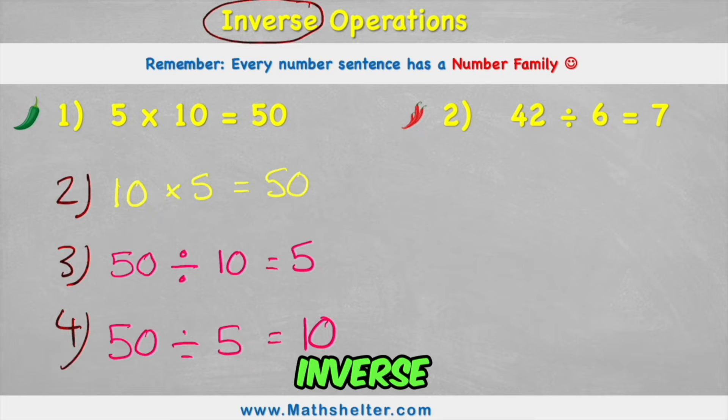Well, inverse means that we can cancel out the operation, or we can check to make sure our question is correct. So we originally looked at this question here, 5 times 10 equals 50. Well this number sentence will have the opposite somewhere in the number family. So let's find it.